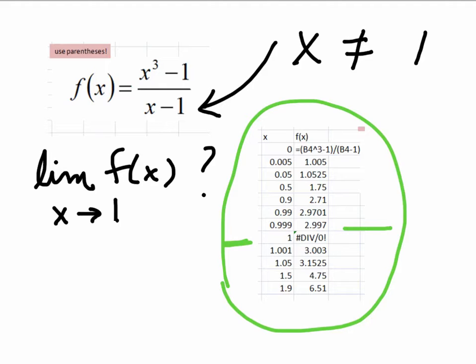We could get closer to 1 on either side. We could put in 0.99999 and we could put in 1.00001. What's happening there is on either side of the function, those values are approaching the same number. So we would say the limit of f of x as x approaches 1 is equal to 3.